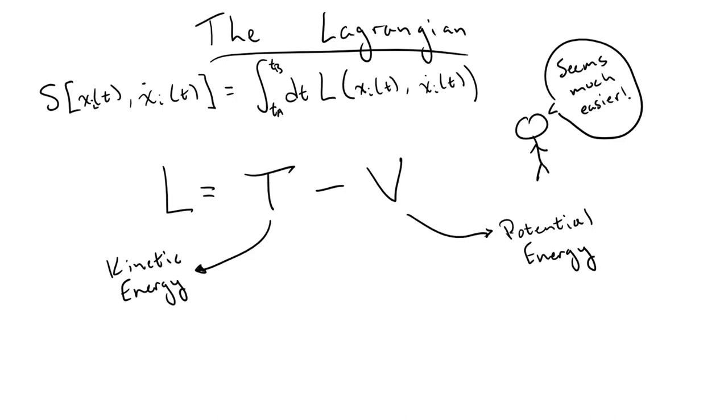But hold on, if we're able to derive how physical systems evolve from the Lagrangian, it makes sense that it should have some sort of physical interpretation, right? But the kinetic energy minus the potential energy? What's the physical interpretation of that? Well, for a very long time, people had no idea. In fact, this form of the Lagrangian was found by backwards derivation from Newton's laws of motion.